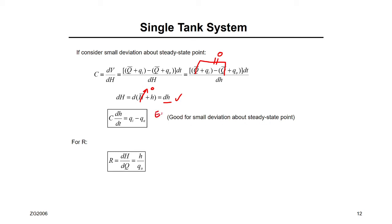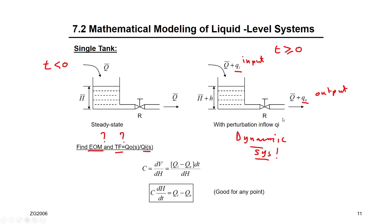This gives us the equation of motion: C dh/dt equals qi minus q-out. This equation is valid for small deviations around the steady state. Now, how many variables do we have? We have small qi, small q-out, and small h — three variables or functions changing with time. To find the transfer function q-out over qi, we need one more equation.